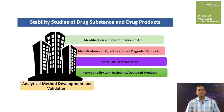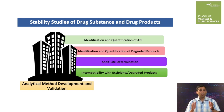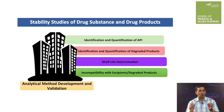For example, the identification and quantification of API requires analytical methods. No one can perform identification and quantification of degraded products without analytical methods. Moreover, for determination of shelf life of drug substances, we need to track the degradation of API, and this is possible with analytical methods only.